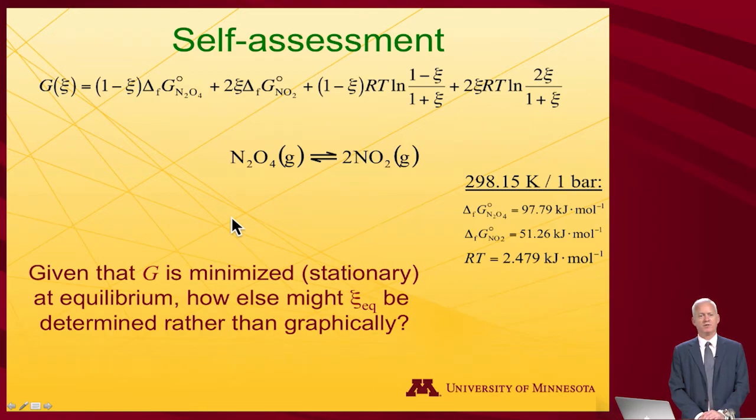And so here's an interesting little self-assessment that we can think about. Given that G is minimized, that is G is a stationary point that defines equilibrium, how else could you determine ξ equilibrium other than measuring very carefully on that graph that I just showed?